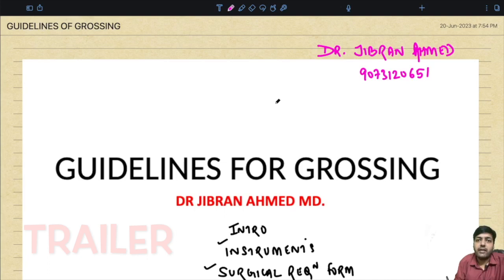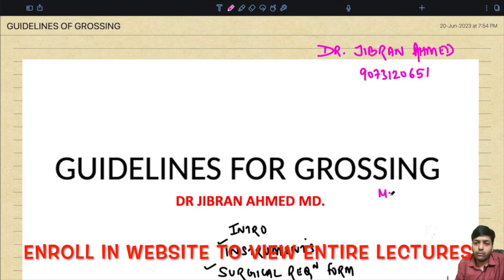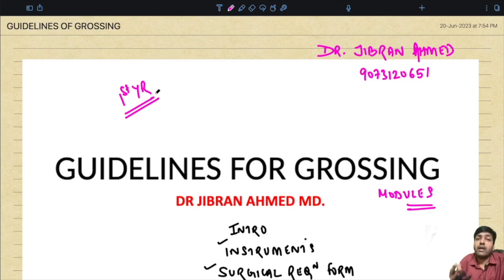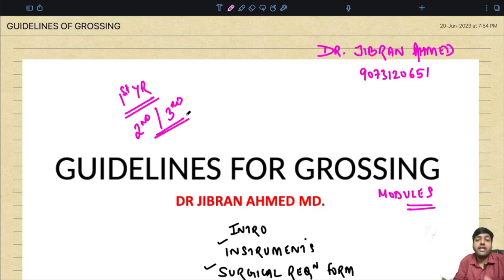Cell Doctor Gibranamat presents Simply Pathology. Today we are starting the series of grossing modules. These grossing modules are very important for orientation of first year MD and DNB residents. You need to understand your role as a pathologist while giving the grossing — not only first year but also second and third year residents. You might be making mistakes, and there might not be anyone to highlight those mistakes, so this is your chance to understand if you are making any errors.